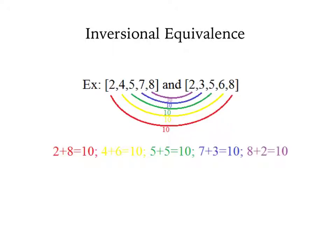To find the index number of inversionally equivalent pairs, the first element in one set corresponds to the last element in the second set, the second element with the second to last, and so on. The addition of these two pitch class pairs equals the index number, so the best way to compare them is to create a rainbow connecting each element of the set to the other.